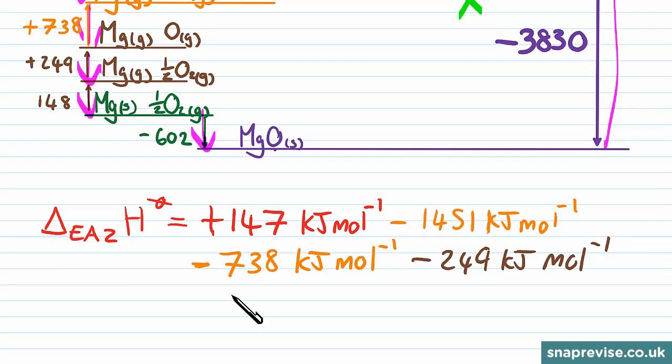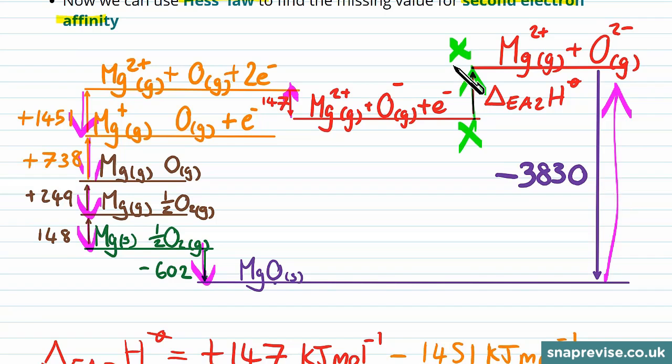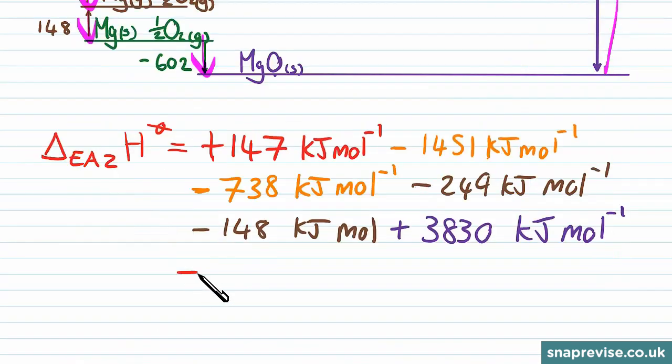And then our final step to get up to the level we want to get up to is to increase the energy by going against the lattice enthalpy. So now we're going to add on 3830. So this gives us a final answer of plus 1391 kilojoules per mole for the second electron affinity of oxygen.